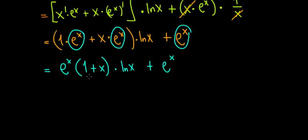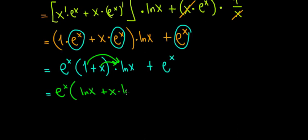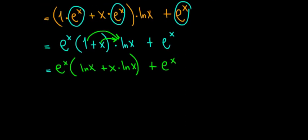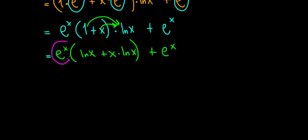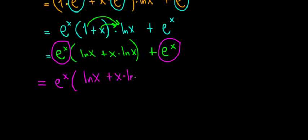We factor out e to the power of x, leaving (1 plus x) times ln of x, plus e to the power of x. Opening the bracket: e to the power of x times (ln x plus x ln x), plus e to the power of x. Factoring e to the power of x again gives us e to the power of x times (ln x plus x ln x plus 1). That's the final answer.